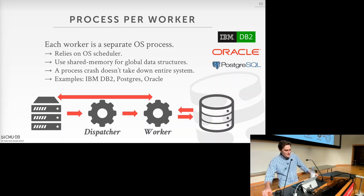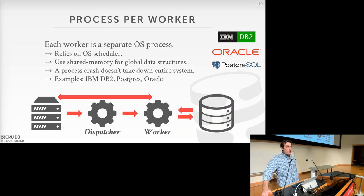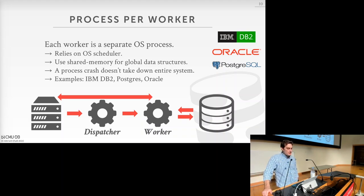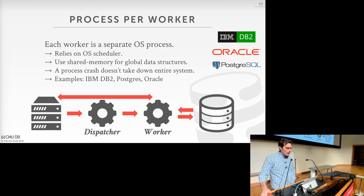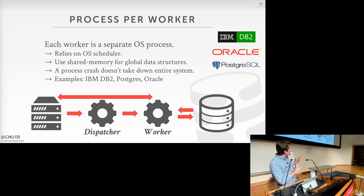When these systems first came out in the 80s or early 90s, there wasn't a portable threading library like pthreads available. If these systems wanted to execute on a bunch of different platforms, they would have had to reimplement threading for each one. So they went with this process-based approach, which required less difficulty switching between platforms — which is why it's considered a legacy architecture compared to newer options.